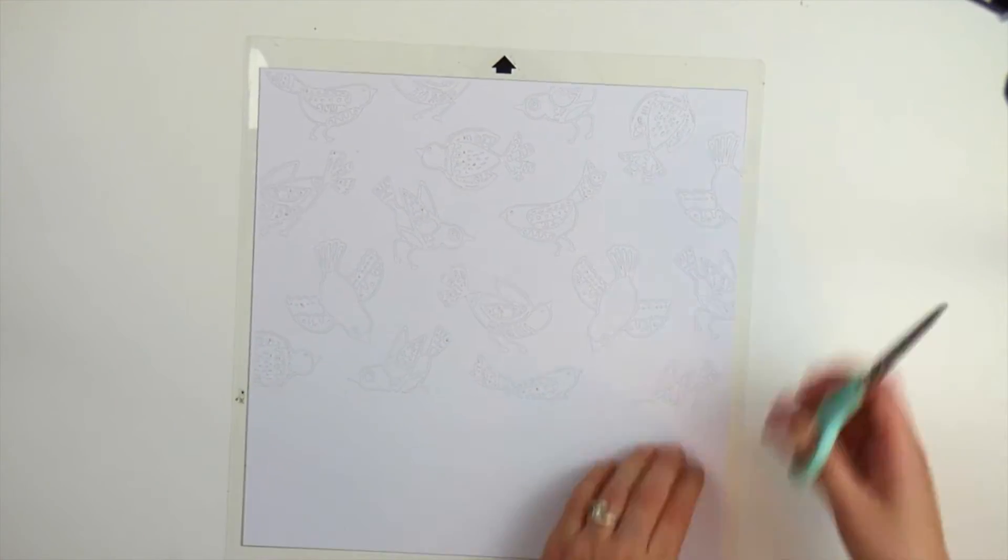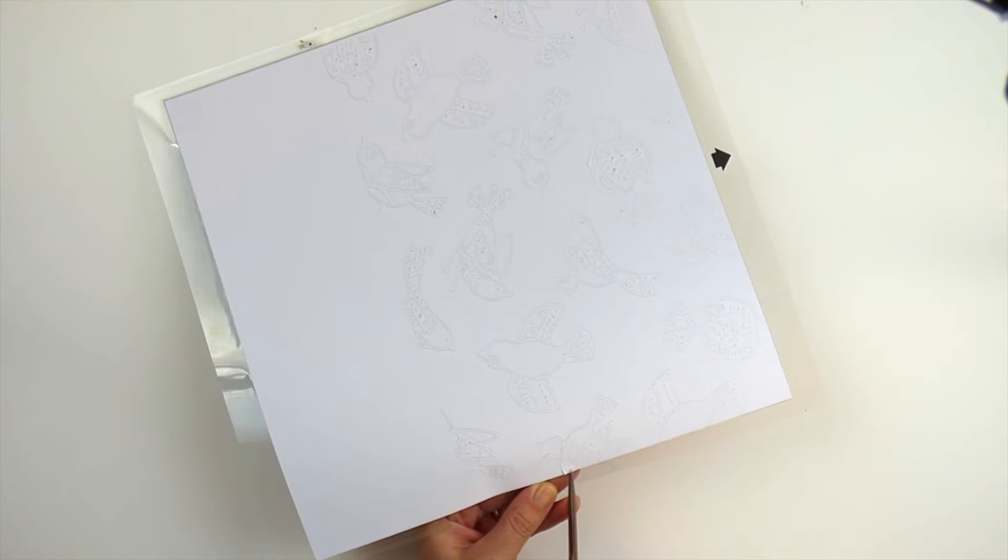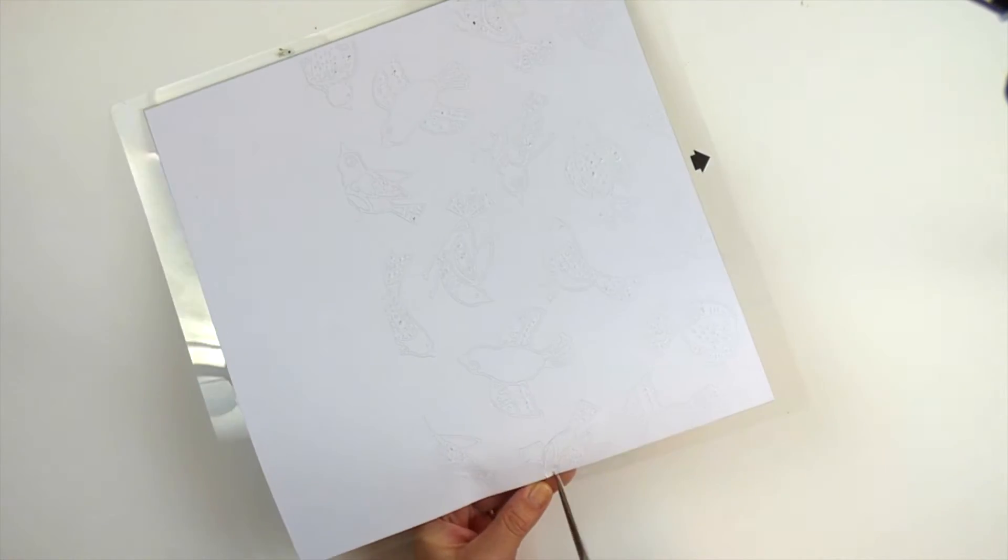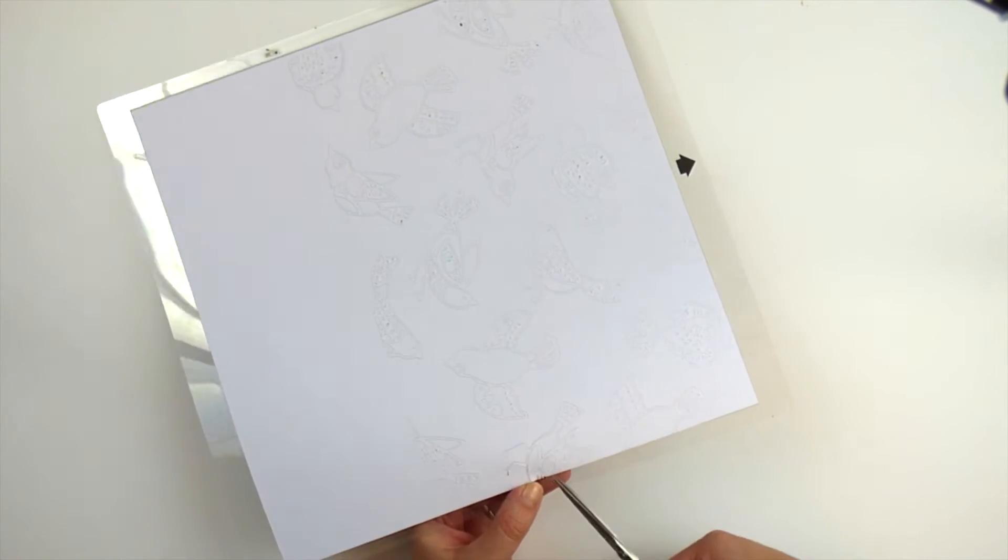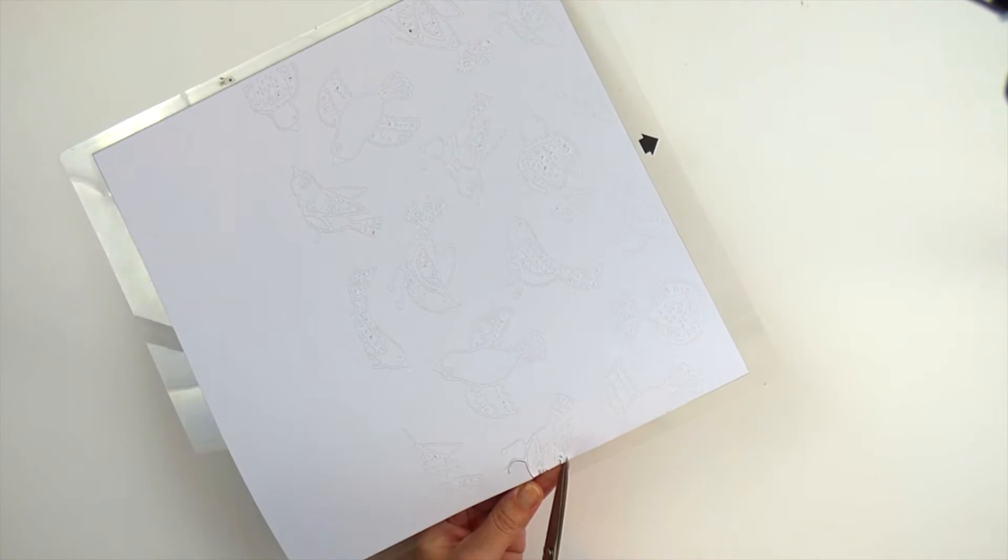Now it doesn't cut all the way to the edge. A cameo just can't do that. So we need to use fine pointed scissors and just finish cutting to the very edge so we get individual birds.